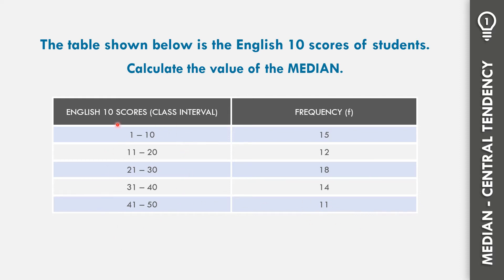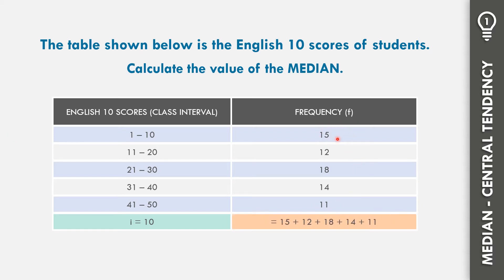Let us identify the interval from 1 to 10. Counting from 1 to 10, the interval is equal to 10. Or if you want, you can subtract: 40 minus 30 equals 10, and 50 minus 40 also equals 10. How about the total frequency? Adding 15 plus 12 plus 18 plus 14 plus 11, the total frequency N is equal to 70.